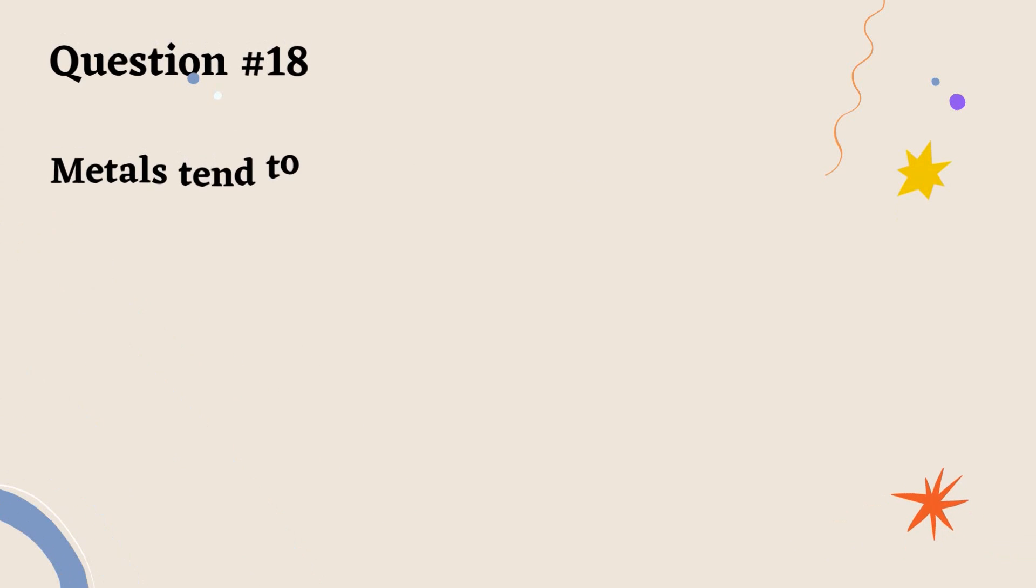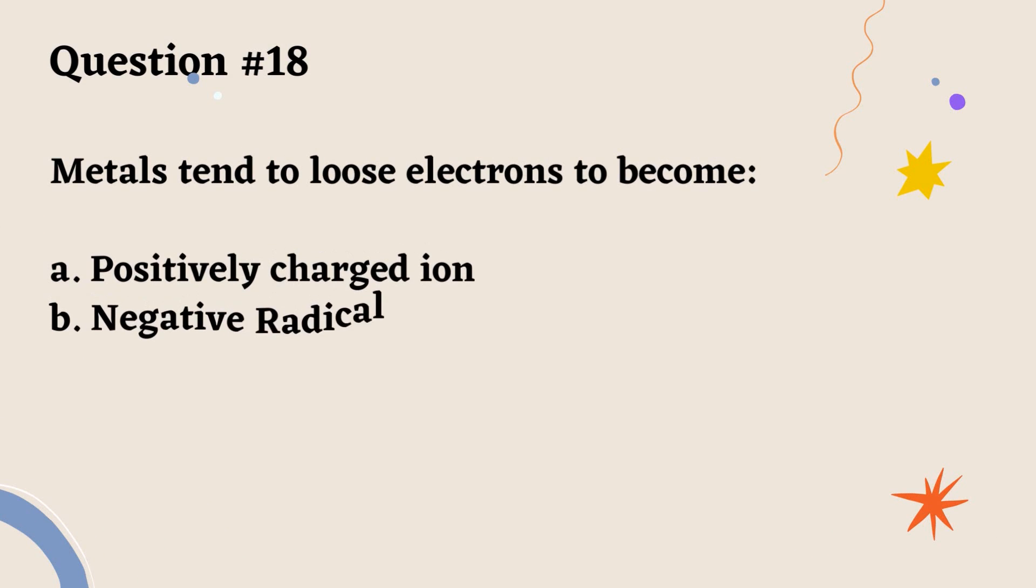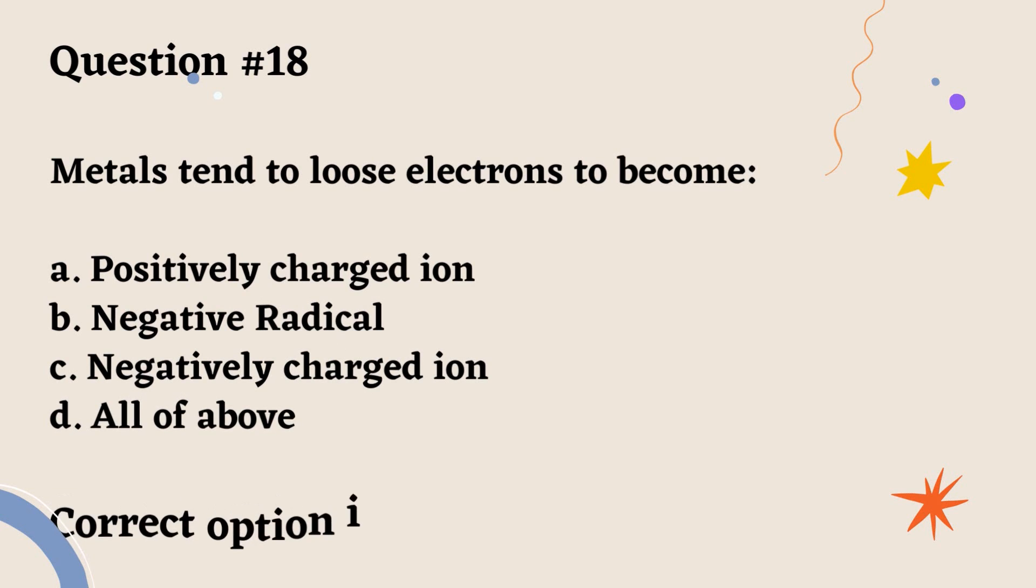Question number 18. Metals tend to lose electrons to become: A. Positively charged ion. B. Negative radical. C. Negatively charged ion. D. All of above. Correct option is A.